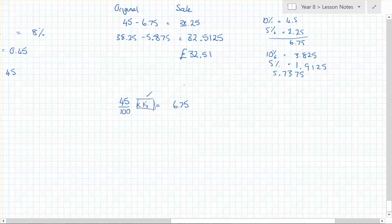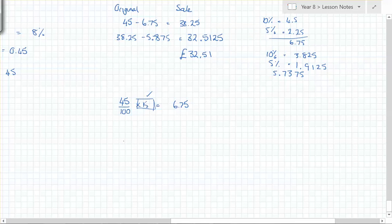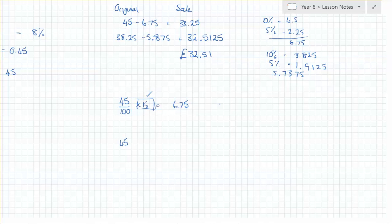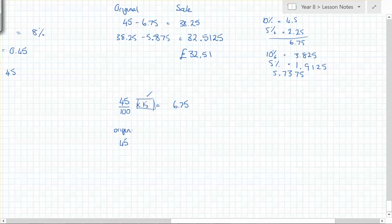A student suggests dividing by 85 — but careful: 45 is not 85 percent here. We're not doing reverse percentages; we're going forwards. 45 is the original, and we need to find the first sale price, then the second sale price.